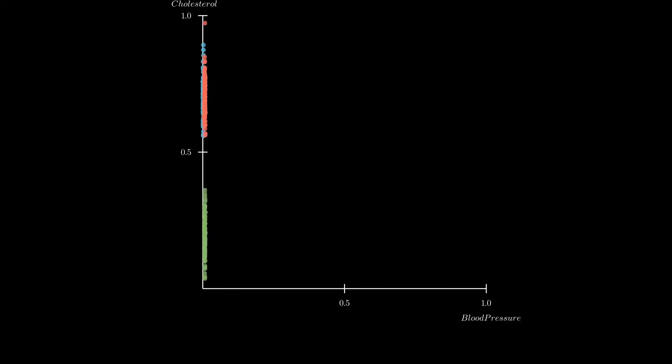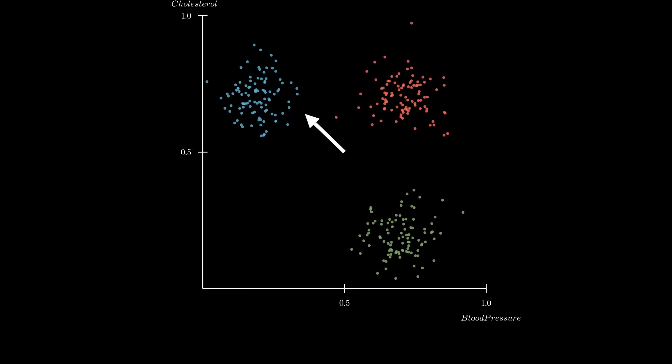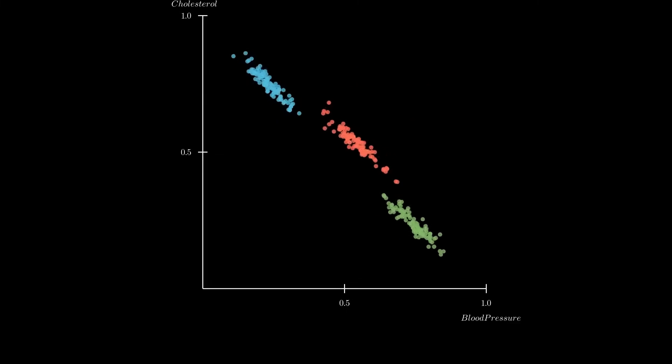And if we project along the other axis, we run into the same issue. Now, what happens if we project onto the principal component? Well, it seems that this time we successfully retain all three clusters in our low dimensional representation.